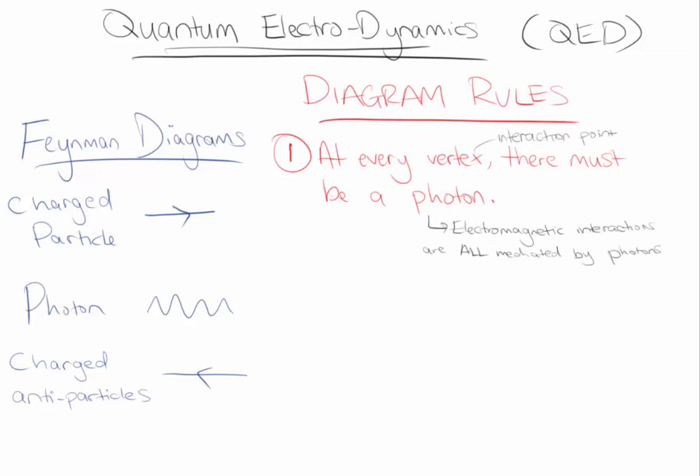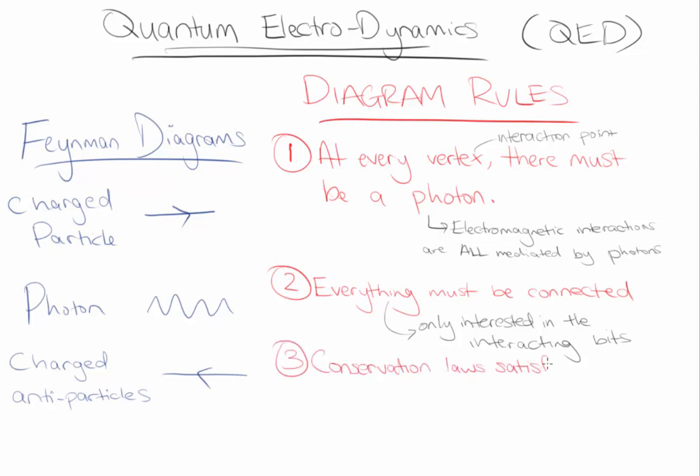The second rule is that there can't be any unconnected bits on the diagram. All this rule is saying is that we are only interested in what's happening in a particular interaction. The next rule is that the conserved quantities of quantum electrodynamics should remain conserved at each vertex on the diagram.